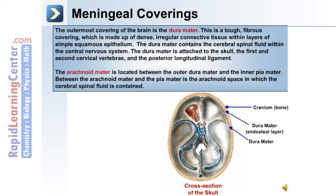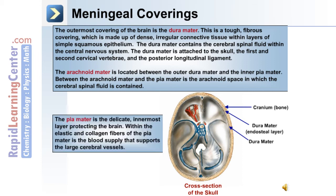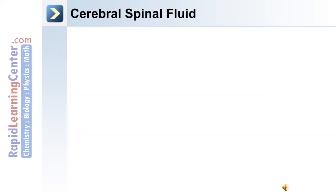Between the arachnoid mater and the pia mater is the arachnoid space, in which the cerebrospinal fluid is contained. The pia mater is a delicate innermost layer protecting the brain. Within the elastic and collagen fibers of the pia mater is the blood supply that supports the large cerebral vessels.